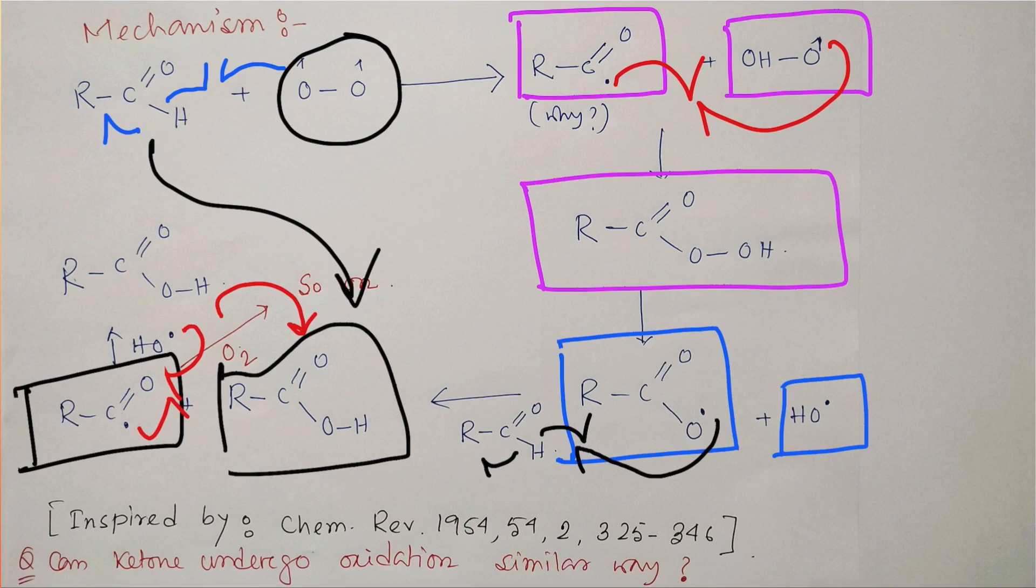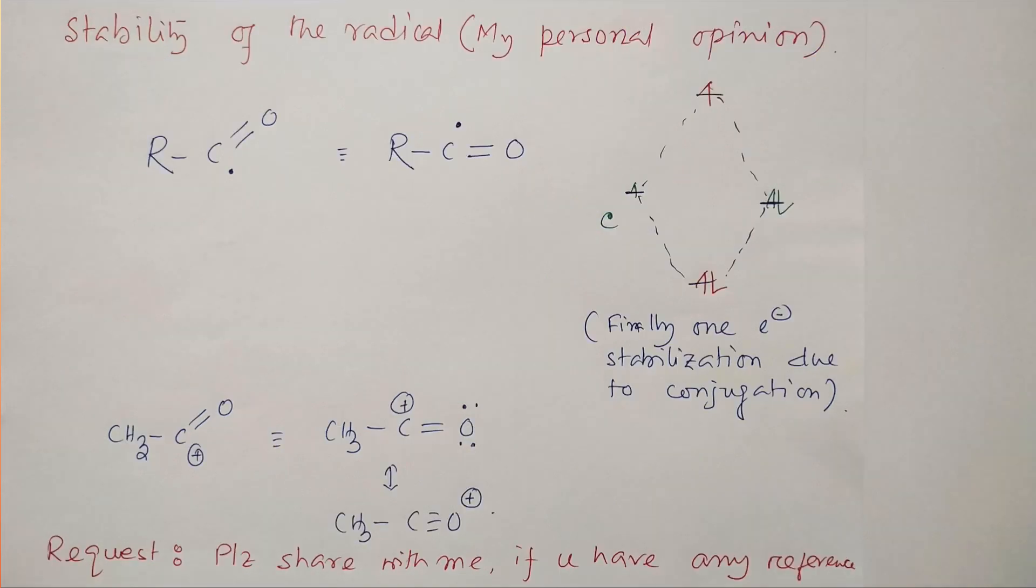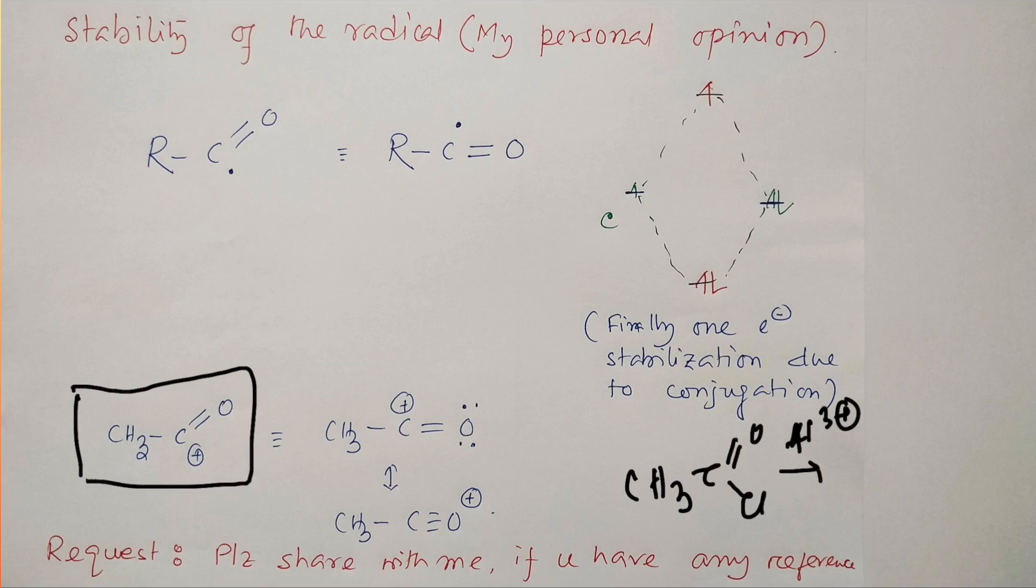Okay, so now let us discuss a little bit why or how this radical is stabilized. You can explain this based on molecular orbital theory—this is completely my personal opinion. I shall be very happy if you can provide any logic or evidence regarding this. The background of this logic is the acylium cation produced during Friedel-Crafts acylation when acetyl chloride or acetic anhydride reacts with AlCl3.